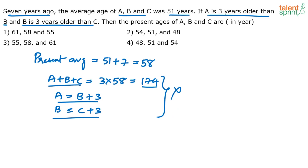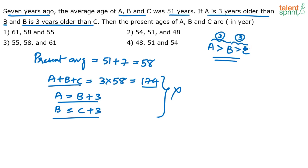Instead, try to eliminate the wrong answers. Clearly, from the data, A is 3 years older than B and B is 3 years older than C, so A must be greater than B and B must be greater than C. The difference between consecutive values must be 3. Just look at the options that satisfy this condition. Option 1: 61, 58, 55 — 61 is 3 more than 58, and 58 is 3 more than 55. Satisfied. So option 1 is a possible answer.